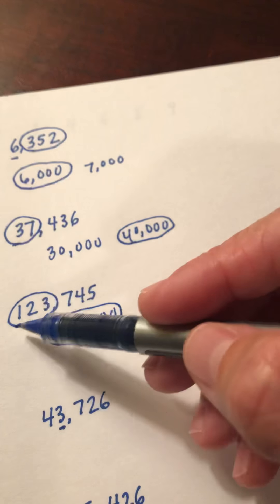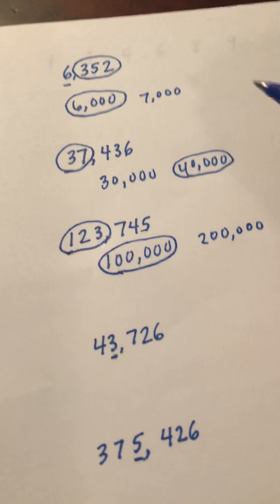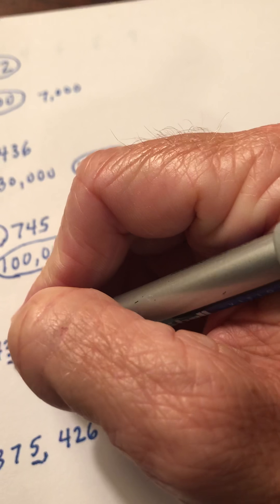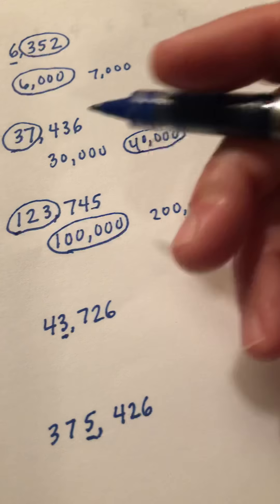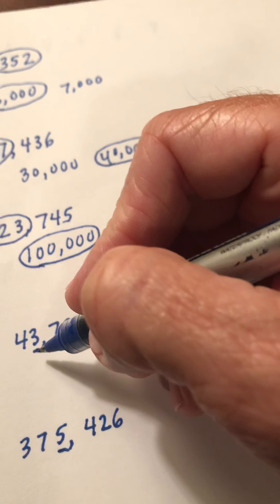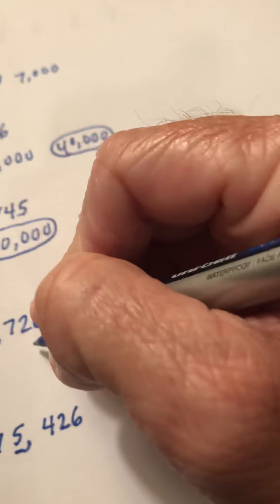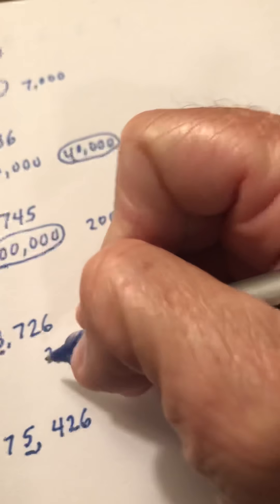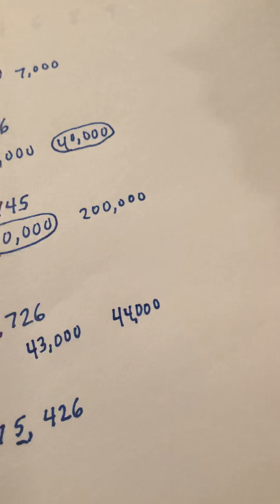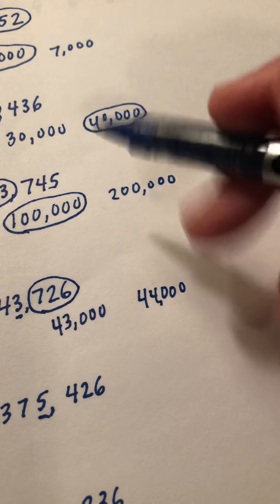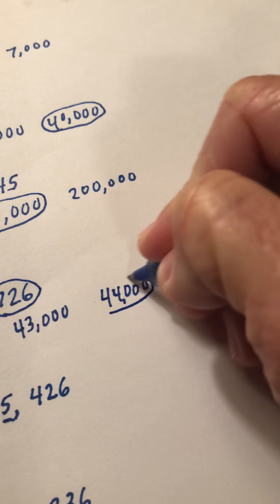All of those examples were rounding to the largest place possible. When we're not rounding to the largest place, it sometimes throws students off, but we follow the same procedure. In this case, it's a number in the ten thousands but we're rounding to the nearest thousand. Skip counting by one thousand: one thousand, two thousand, three thousand, four thousand, five thousand. Students often say the number is between three thousand and four thousand, but what they really need to understand is it's forty-three thousand and forty-four thousand. Seven hundred twenty-six tells us it is over the halfway point of forty-three thousand five hundred, so it rounds up to forty-four thousand.